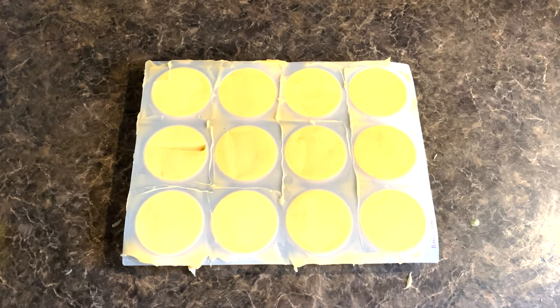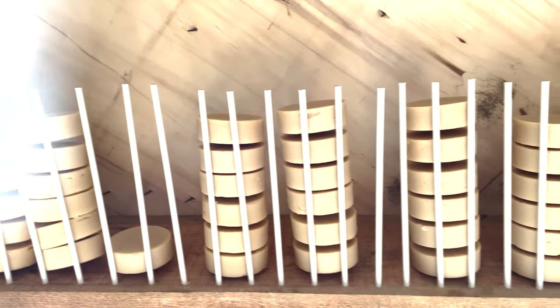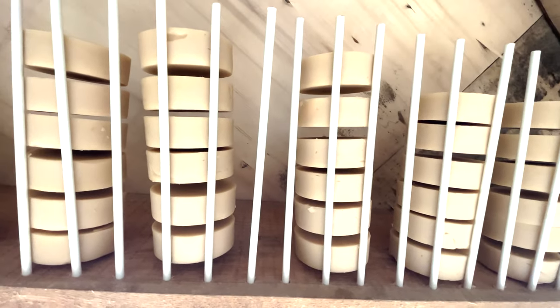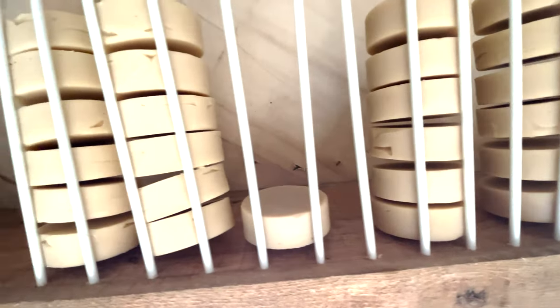For the curing process, you will want to place your soaps in a well-ventilated space where air can pass through on each side of your soap molds. Here you can see what my design is for curing my soaps, and you will need to cure your soaps for around two weeks before you can then use them.